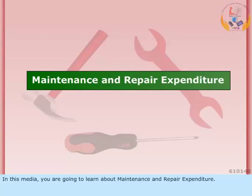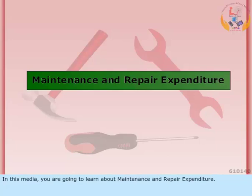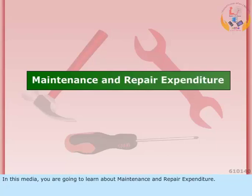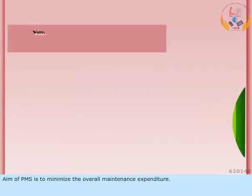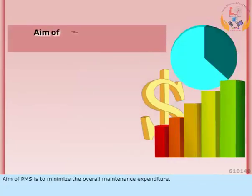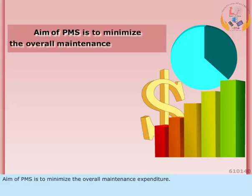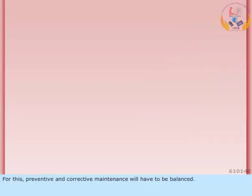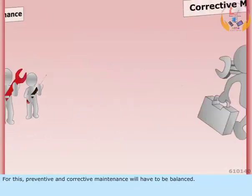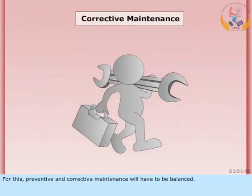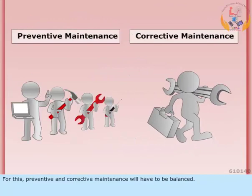In this media, you are going to learn about maintenance and repair expenditure. The aim of a Planned Maintenance System (PMS) is to minimize the overall maintenance expenditure. For this, preventive and corrective maintenance will have to be balanced.